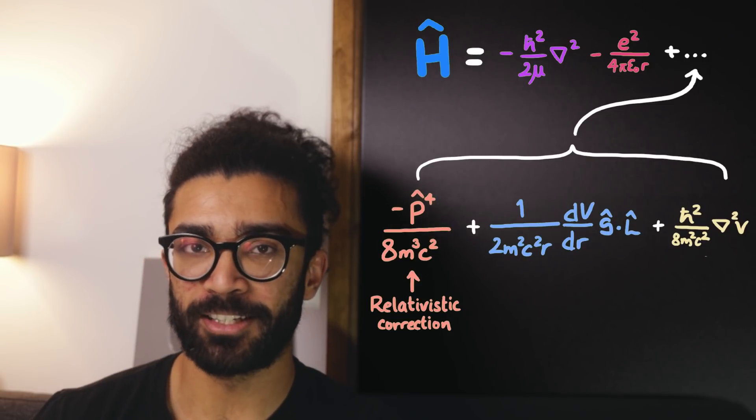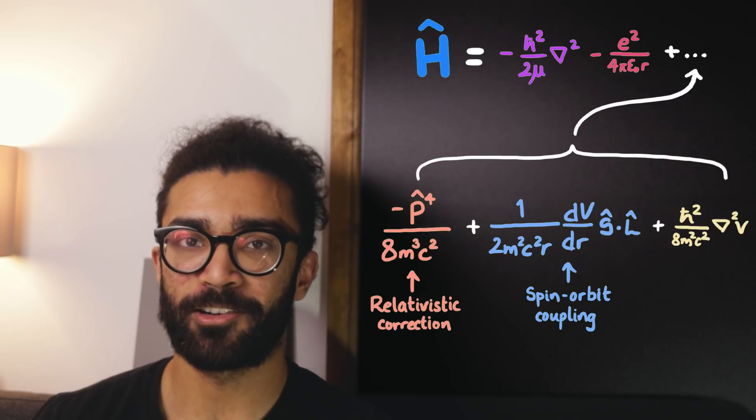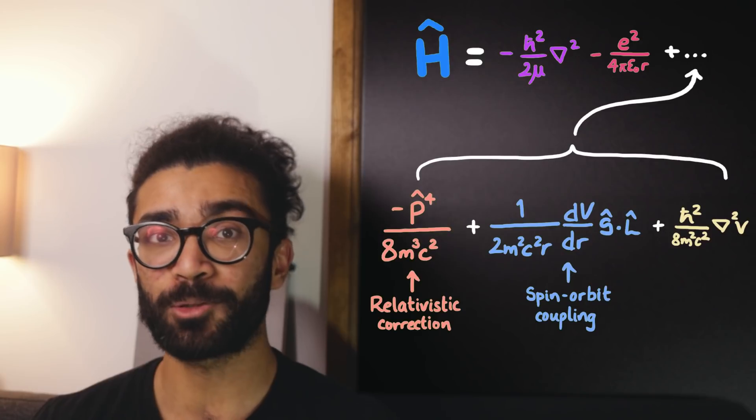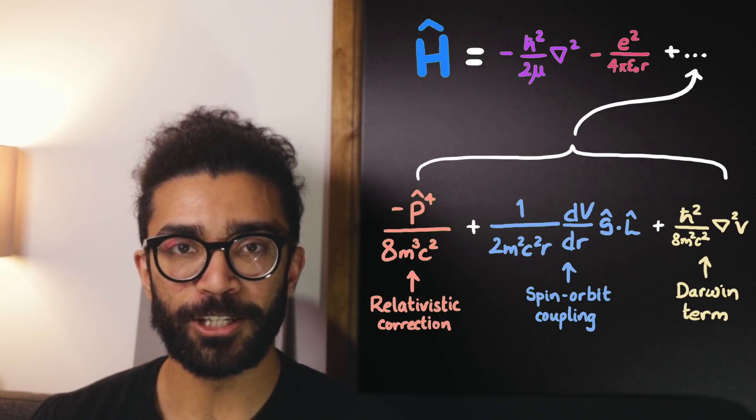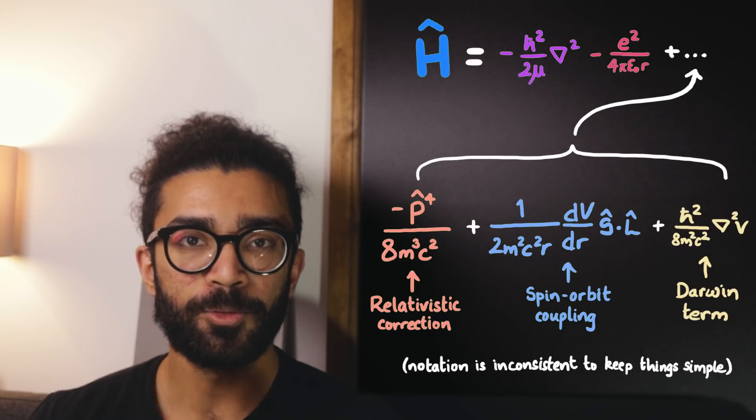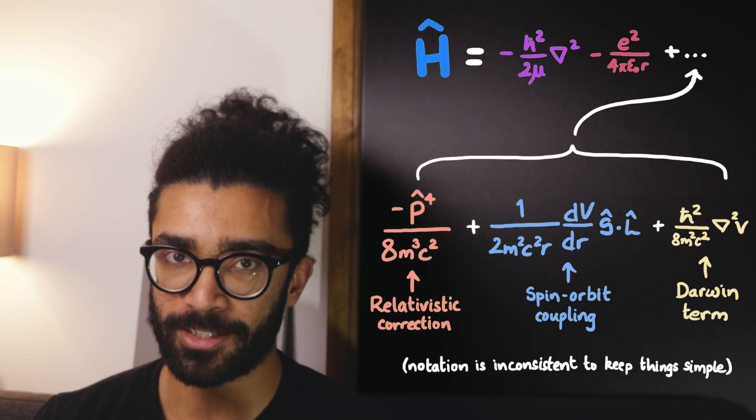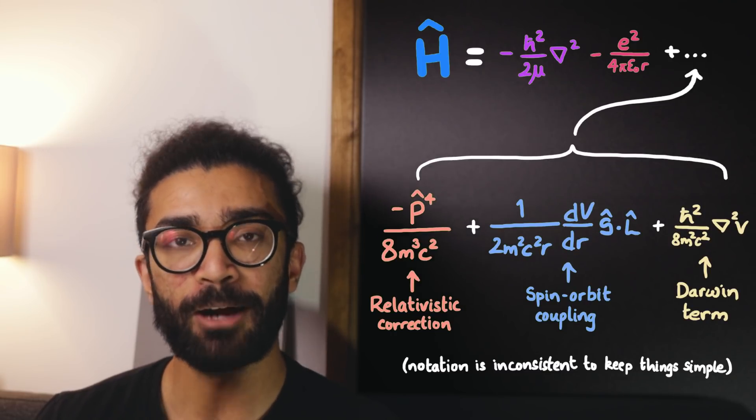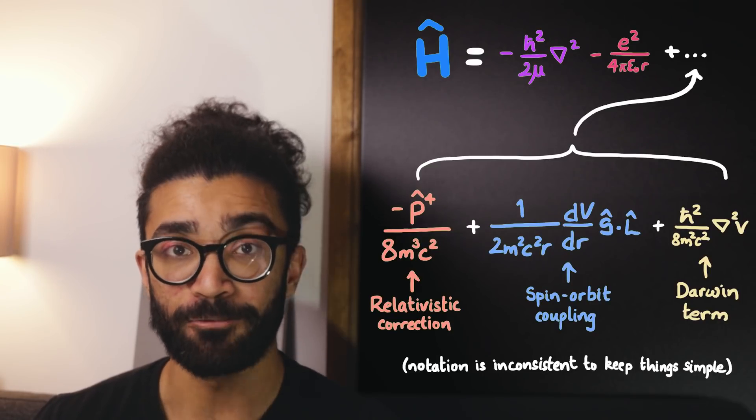And then we need to consider a term that deals with what's known as the spin of our particles. We start by just considering the spin of the electron. And finally, we also need to consider a completely quantum mechanical term known as the Darwin term. These three terms deserve a video of their own, and I do want to make this video at some point in the future. But the point is that these three terms provide a much smaller contribution to the structure of a hydrogen atom, hence contributing to the fine structure. And because we've now added these terms to our Hamiltonian, our theoretical prediction will more closely match what we observe in real life.